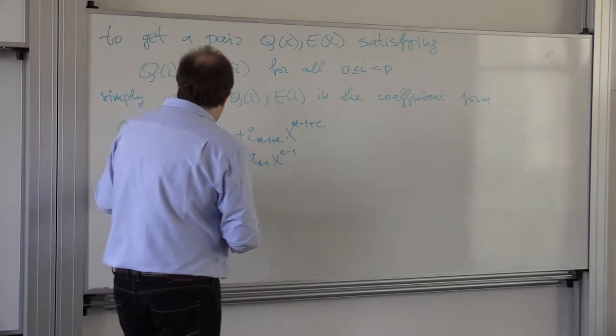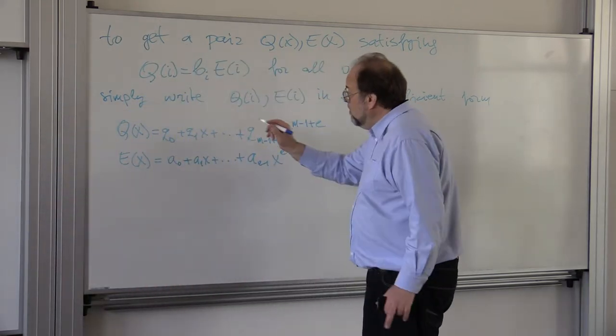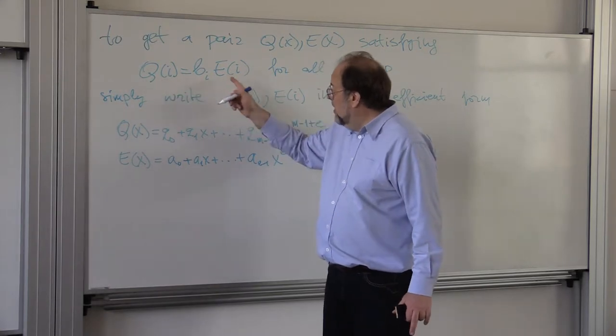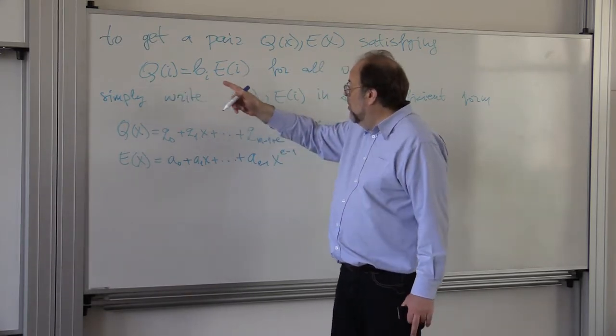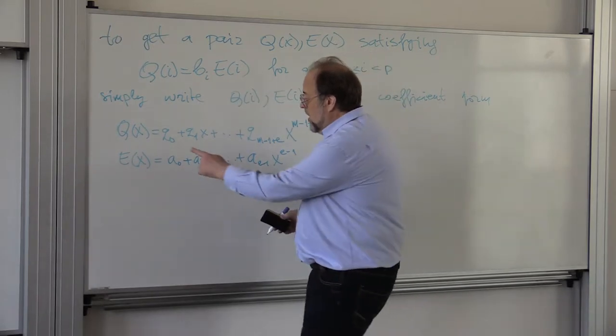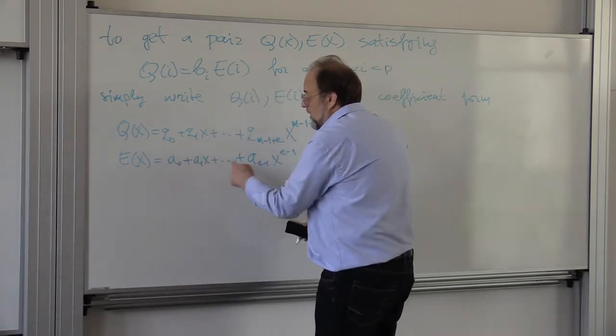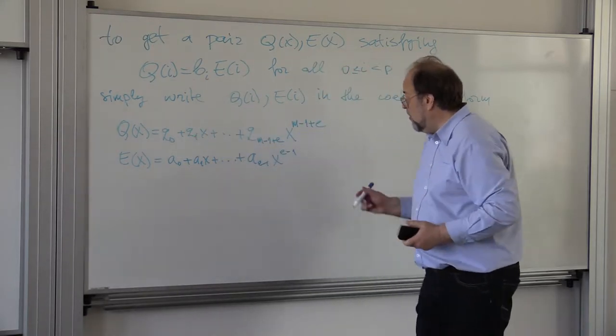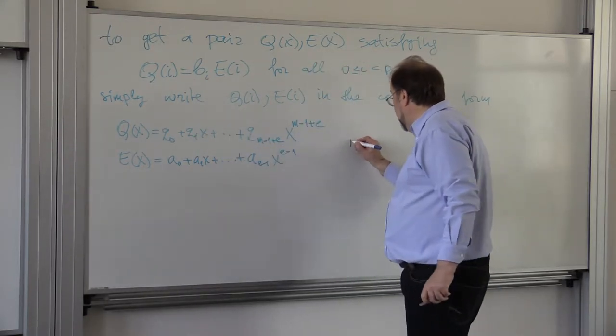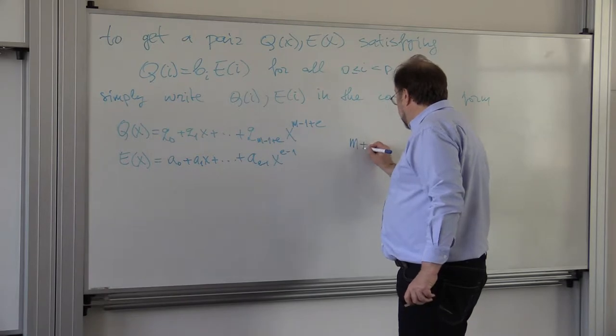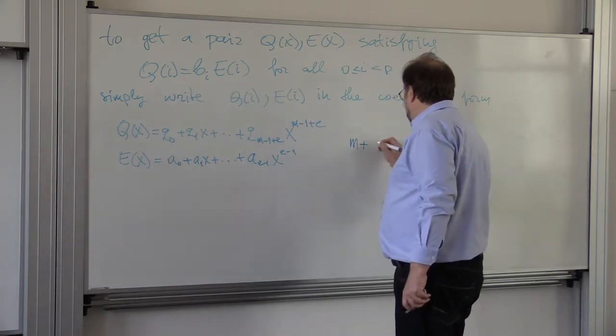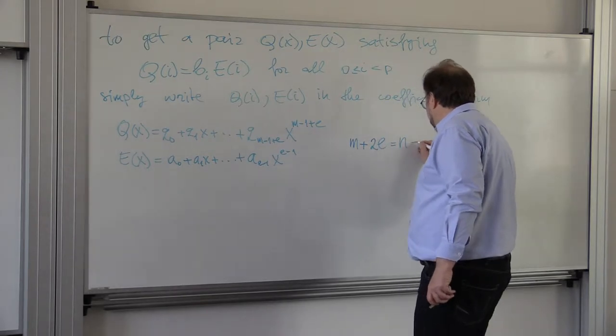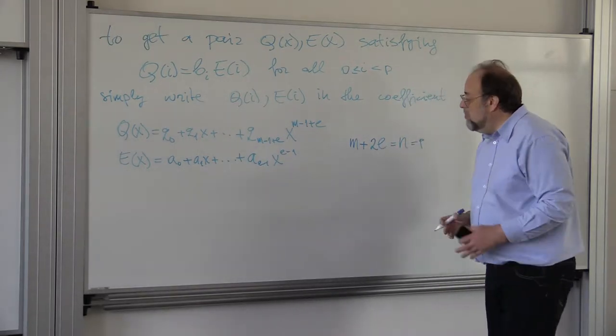Simply substitute all the values from 0 to n or p, if you will, here. And you get a system of linear equations. How many of them? You get m plus 2e, which is equal to n equals to p, many equations.